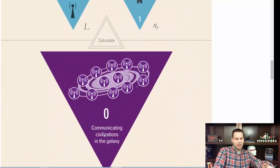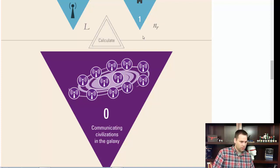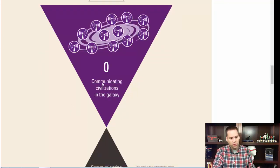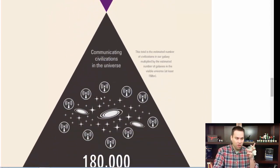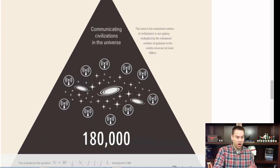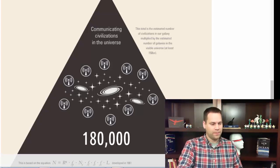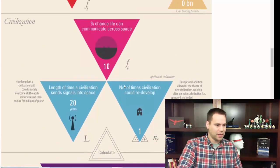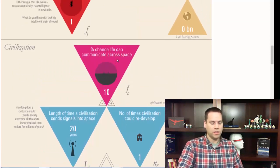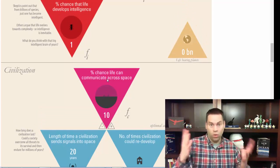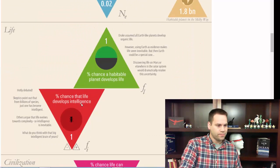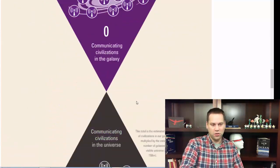With all these very pessimistic constraints, how many communicating civilizations would we expect in our galaxy? Zero. But if you consider all the galaxies in the universe, you'd have 180,000 communicating civilizations. Even with extremely pessimistic guesses — if any one of these numbers, like the percent chance that life develops, were one in a trillion, the whole equation goes to zero or just one.